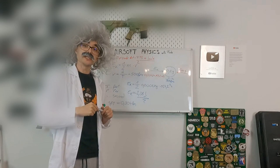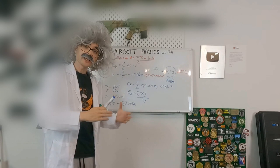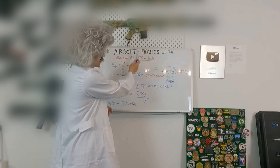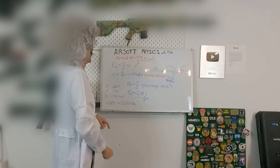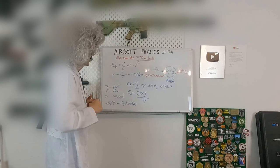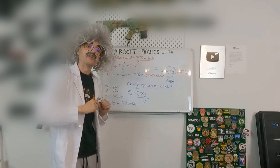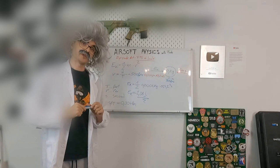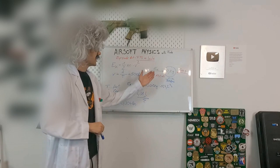So what have we learned today? First of all, FPS is a unit for speed and Joules is a unit for kinetic energy. Kinetic energy is needed to accelerate an object to a given speed. So without energy there is no FPS, and without speed there is no kinetic energy. We also learned that to calculate kinetic energy we need the mass of our object and the velocity, which we get from our chronograph.